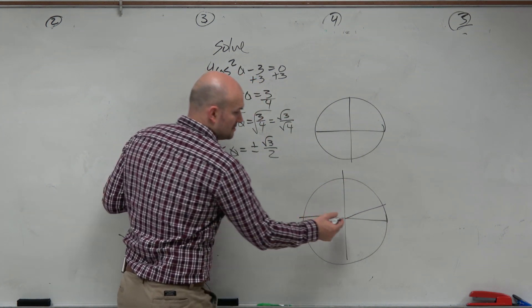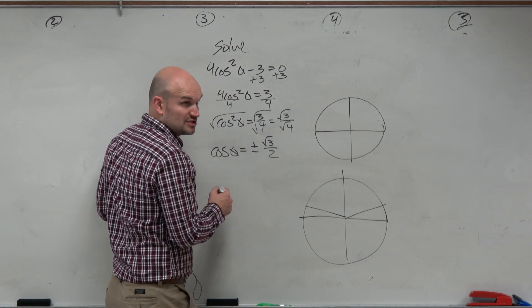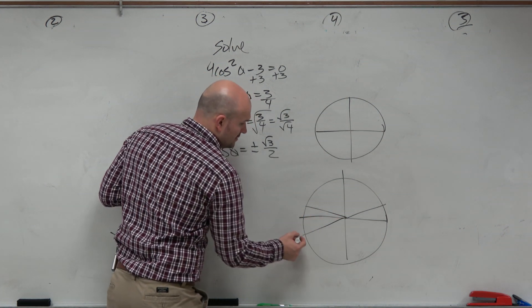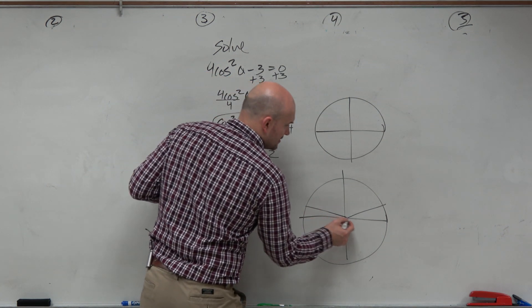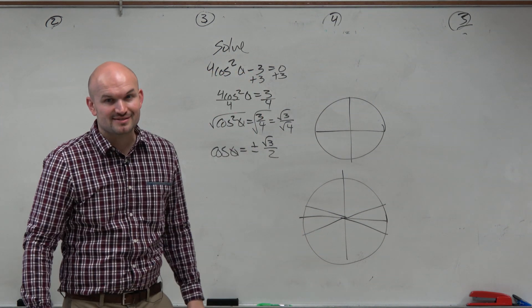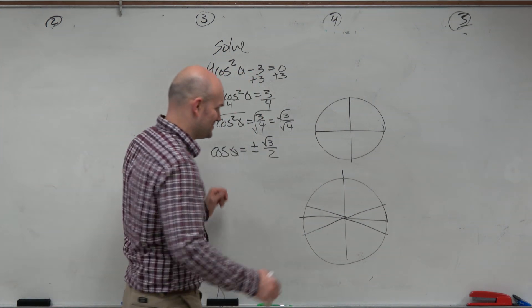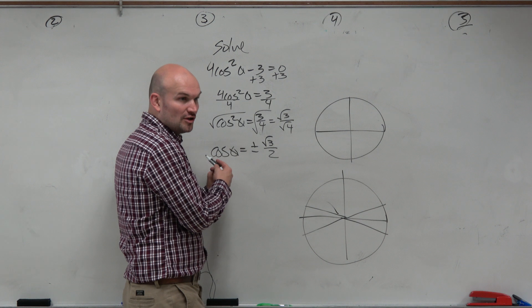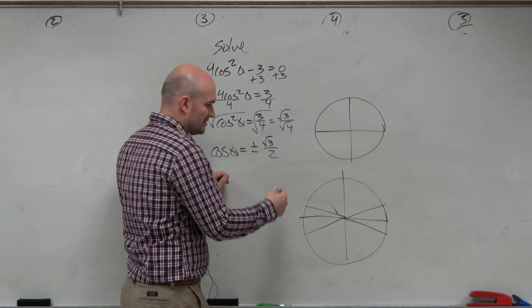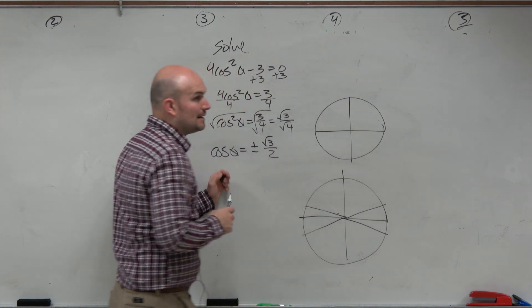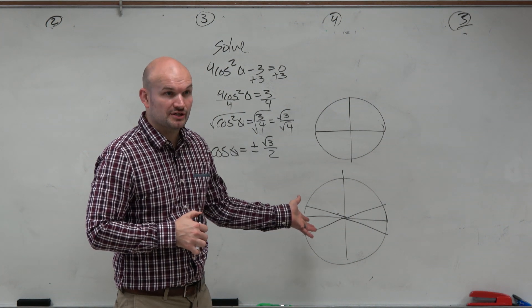So I have pi over 6. This has the same reference angle, which is 5 pi over 6. This one, which is 7 pi over 6. And that one, which is 11 pi over 6, right? Because we reviewed the unit circle. These all have the same reference angle of pi over 6. I'm just kind of doing a quick little thing there. Now, so those are all the angles on the unit circle.